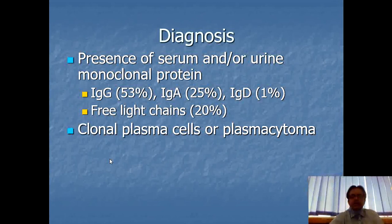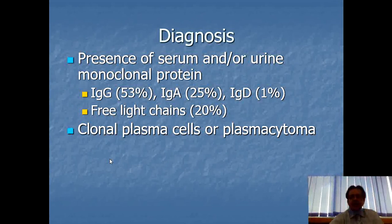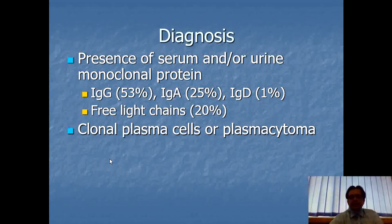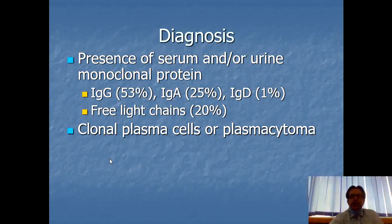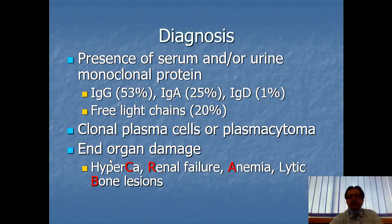For diagnosis, the presence of serum and/or urine monoclonal proteins is required. The most commonly found immunoglobulin is IgG at about 53%; IgA accounts for 25%; IgD is only 1%; and free light chains (lambda and kappa) are about 20%. Clonal plasma cells or plasmacytomas are also listed in the diagnostic criteria. End organ damage includes hypercalcemia, renal failure, anemia, and lytic bony lesions.